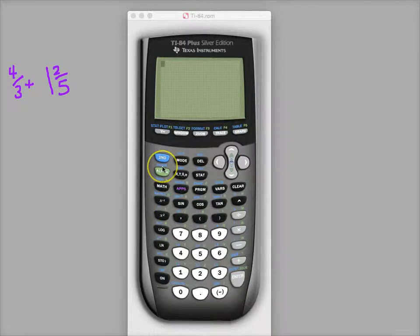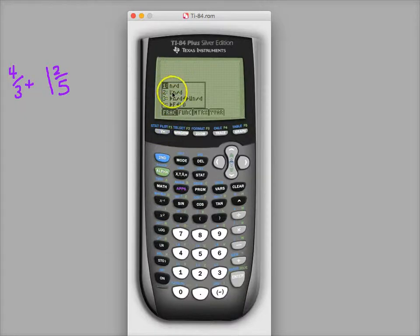There's a nice menu if you can remember. If you go to the alpha button and Y equals, the menu is hidden right there. That's the only way I've always done it.